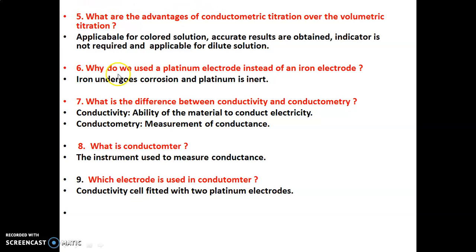Why do we use a platinum electrode instead of an iron electrode? Iron undergoes corrosion, so the readings are not correct. Therefore, we use platinum as the electrode because platinum is a noble material — it is inert and does not undergo corrosion. It is stable.